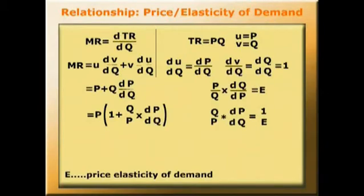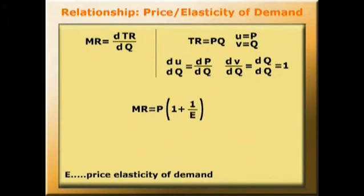Now, substituting this into our expression for MR, we get that MR equals P times 1 plus 1 over E. This is the inverse elasticity pricing rule.